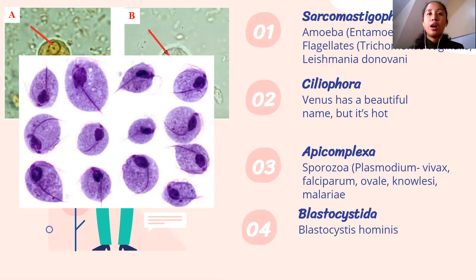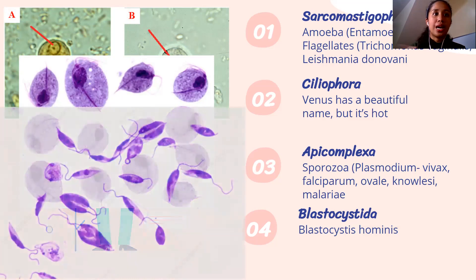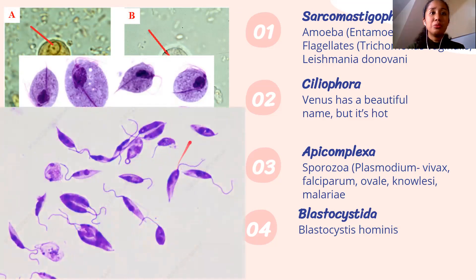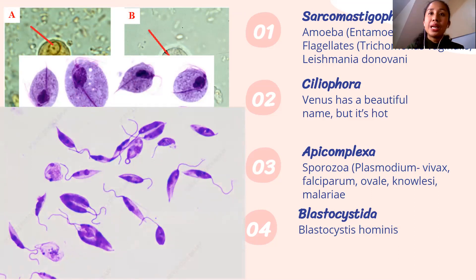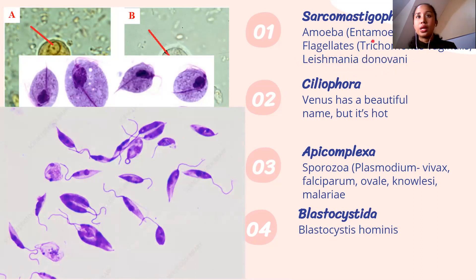We have hemoflagellates — blood flagellates. These include Leishmania donovani and Trypanosoma cruzi, found in the blood. So for Leishmania and Trypanosoma, the specimen is blood; for Trichomonas vaginalis, it's urine; and for Entamoeba histolytica, it's stool.